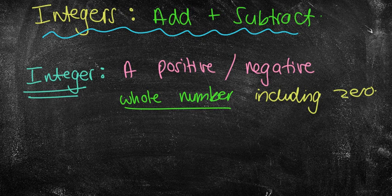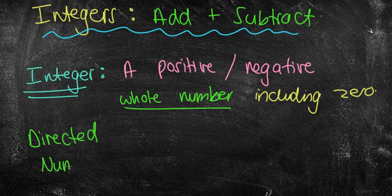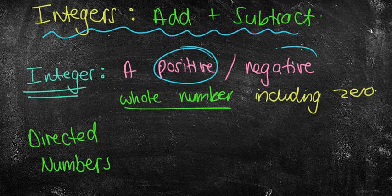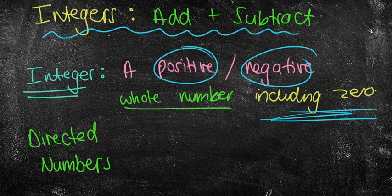So basically an integer is a number that has direction. It's either a positive number or it's a negative number or it also could be zero, but it needs to be a whole number. Now in some places they might refer to integers as directed numbers. Particularly in London I know when I taught there, they certainly use directed numbers as the word instead of integers. It means the same thing. It just means number with directions: positive, negatives, including zero. But obviously they have to be whole numbers.